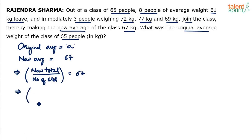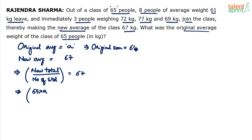How do you get the new total? Originally there were 65 people with average A, so the original sum is 65 times A. From this, we subtract: eight people of average weight 61 kg left, so the reduction is 8 times 61. So we have 65A minus 8 times 61.